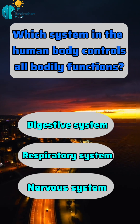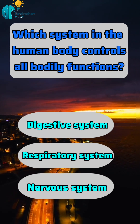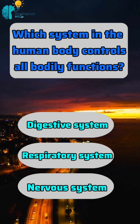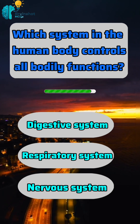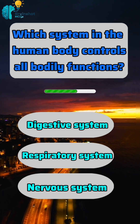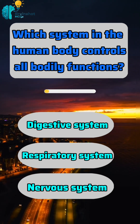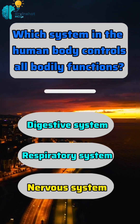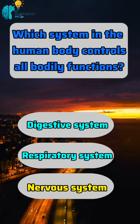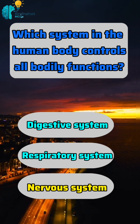Which system in the human body controls all bodily functions? Correct answer: C. Nervous system.